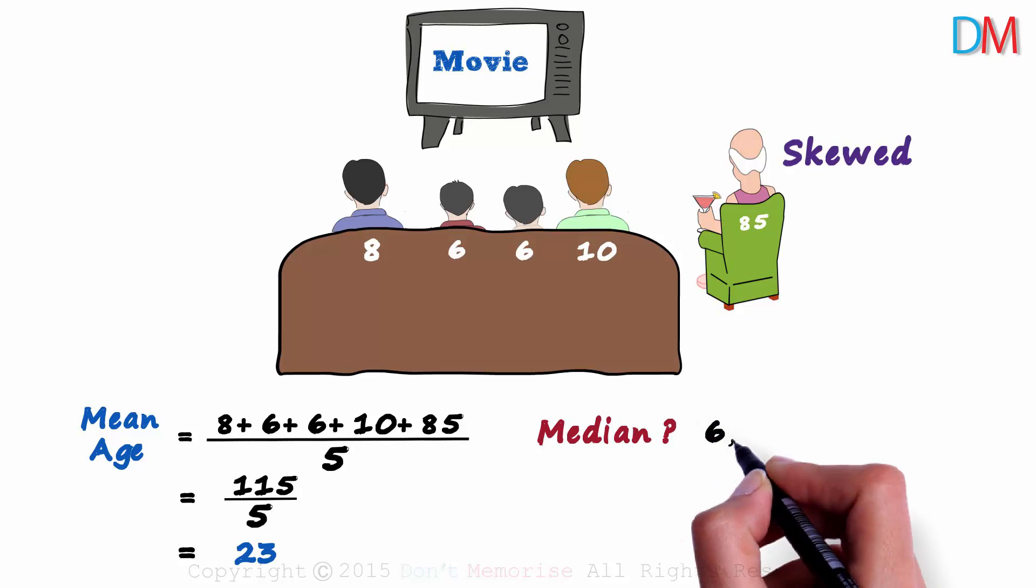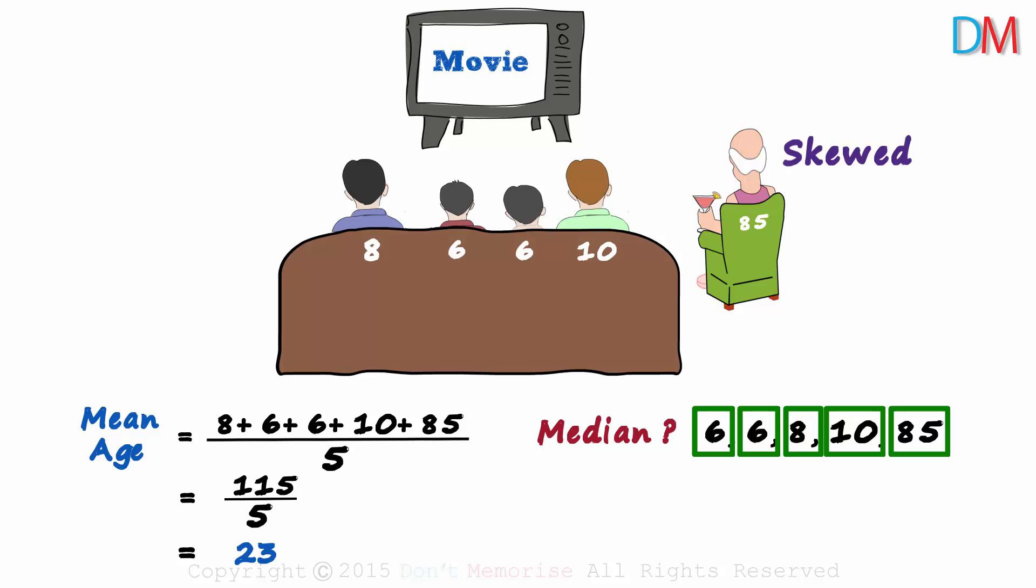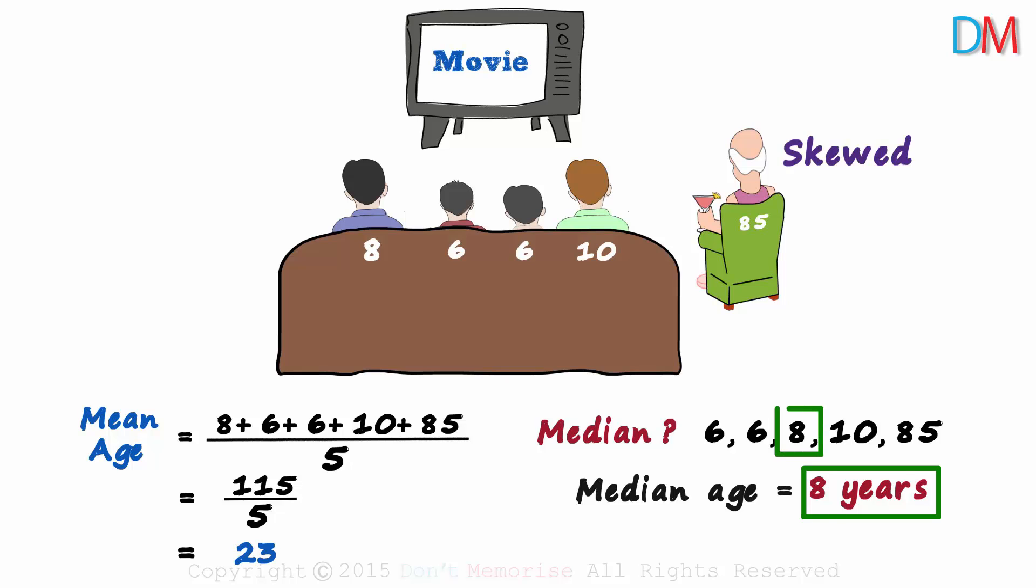So we write it as 6, 6, 8, 10 and 85. It has 5 values and the one in the middle will be the median age. It will be 8 years as it falls exactly in the middle. Two values on its right and two on its left. So the median definitely gives us a far better representation of the age of the people of this group.